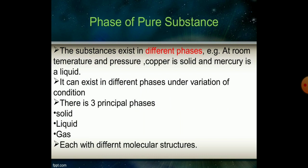At room temperature and pressure, copper is a solid and mercury is a liquid, showing substances can exist in different phases — solid, gas, or liquid. There are three principal phases for any substance: solid, liquid, and gas. For water specifically, the solid phase is ice, the liquid phase is simply water, and the gaseous phase is vapor or steam, each with a different molecular structure.